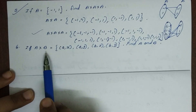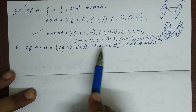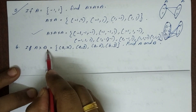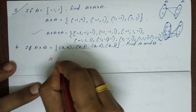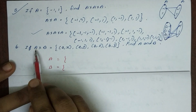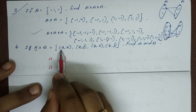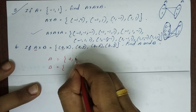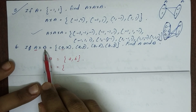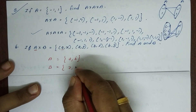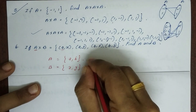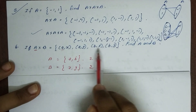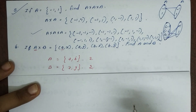Next question: if A×B = {(a,x), (a,y), (b,x), (b,y)}, find A and B. The first elements of the ordered pairs form set A = {a, b}, and the second elements form set B = {x, y}. A has 2 elements, B has 2 elements, so A×B has 4 elements.